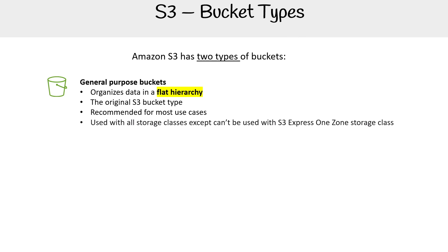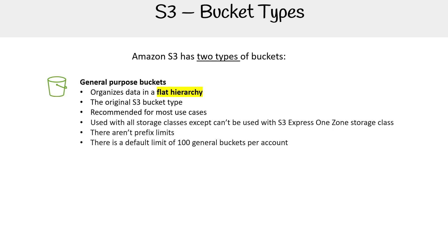Because it is recommended for most use cases, it works with all storage classes except for one in particular called the S3 Express One Zone storage class. There are no prefix limits, and there is a default limit of 100 general purpose buckets per account, which is the limit we talked about earlier in our restrictions and limitations.